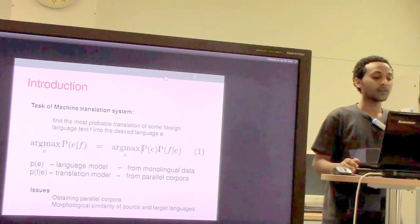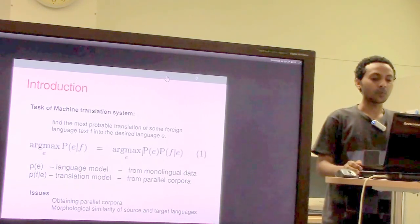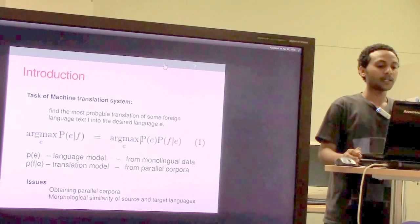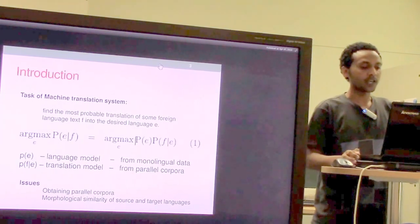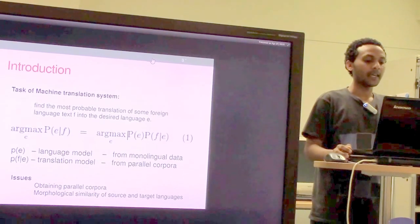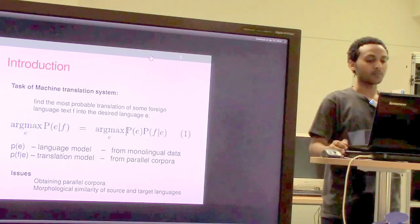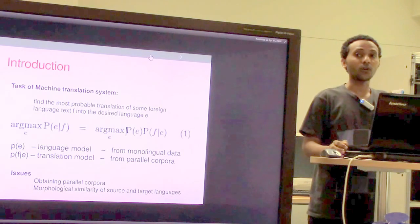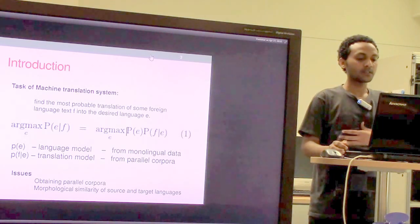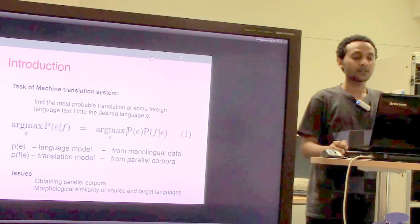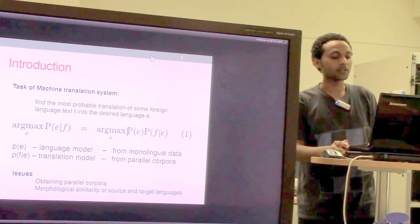Generally, the task of machine translation involves finding the most probable translation of some source language into another target language. For this, the noisy channel model is used, where P(E) is the language model and the probability of F, the foreign language conditioned on E, forms the translation model. The language model is estimated from monolingual target data, and the translation model is estimated from parallel corpora.